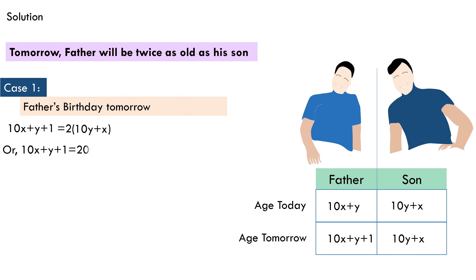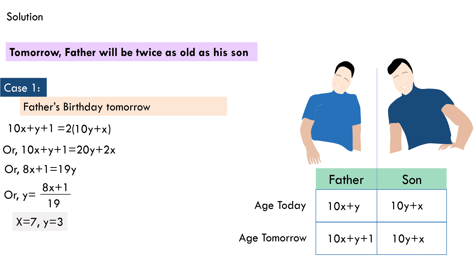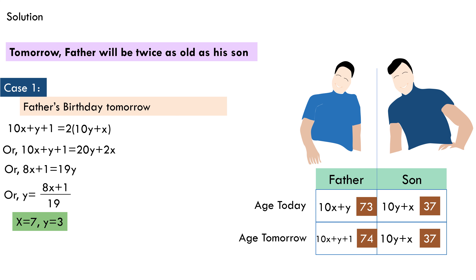Working it out: 10x plus y plus 1 equals 20y plus 2x, which gives us 8x plus 1 equals 19y, or y equals (8x plus 1) divided by 19. Finding values of x and y that satisfy this equation, we get x equals 7 and y equals 3. This means the father's current age is 73 and the son's age is 37. When the dad turns 74 tomorrow, the son's age will still be 37, so the father will be exactly twice his son's age. Therefore, 73 and 37 is one possible answer.